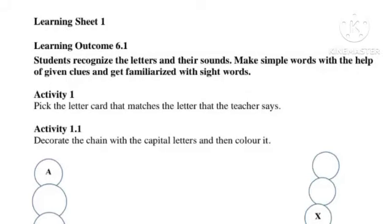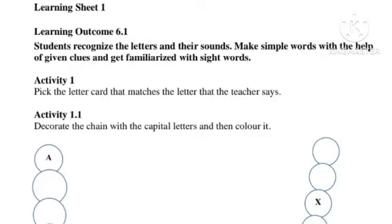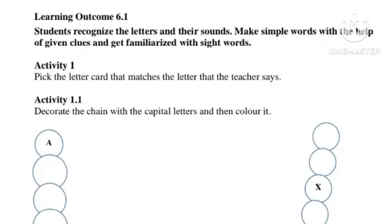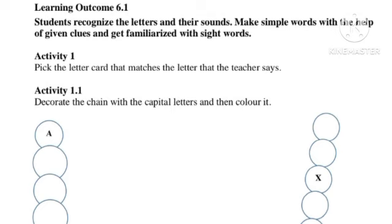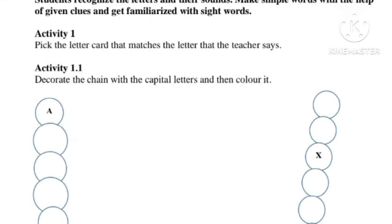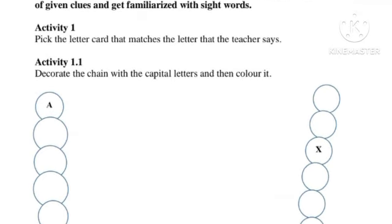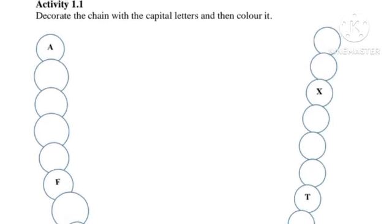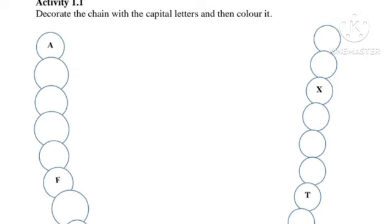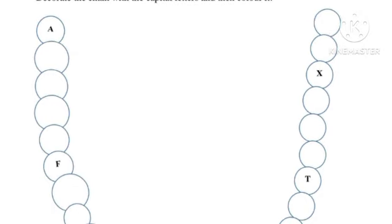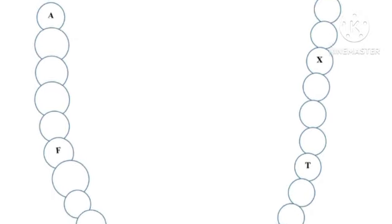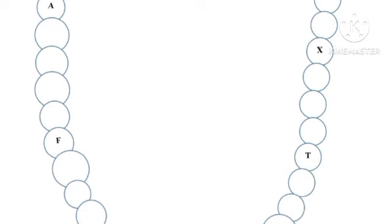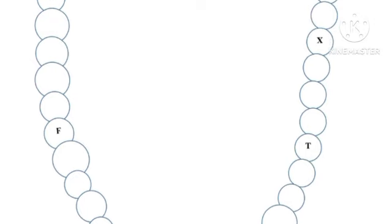In this video we are going to study learning worksheet number 1 of class 6, learning outcome 6.1. Students recognize the letters and their sounds, make simple words with the help of given clues, and get familiarized with sight words. Activity number 1: pick the letter card that matches the letter that the teacher says.